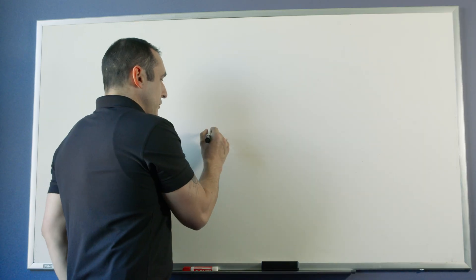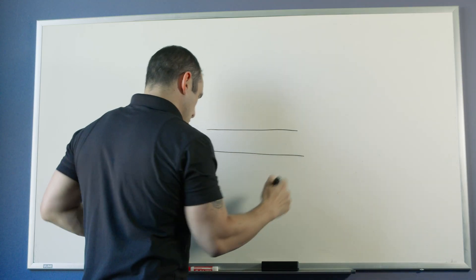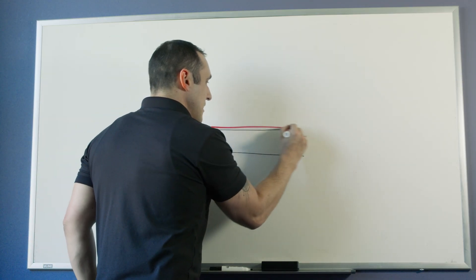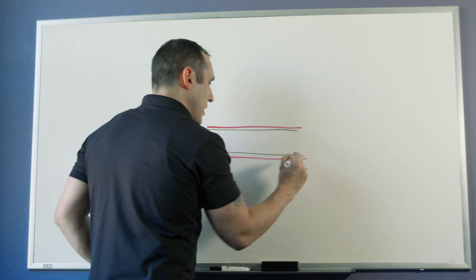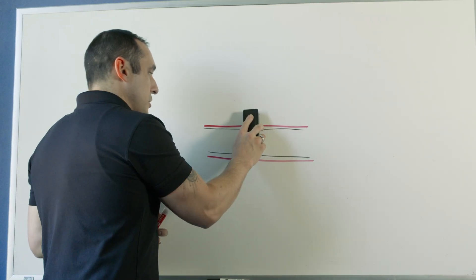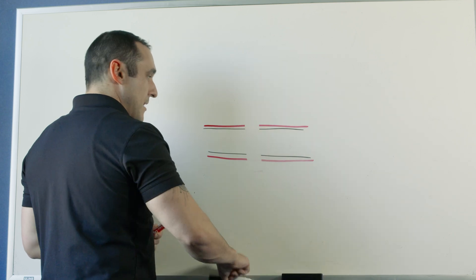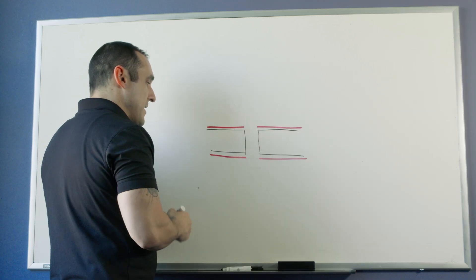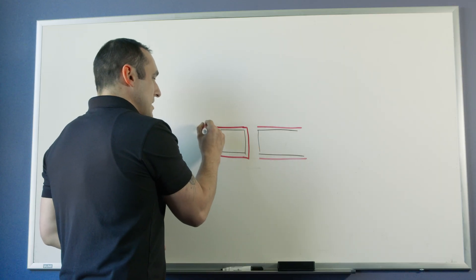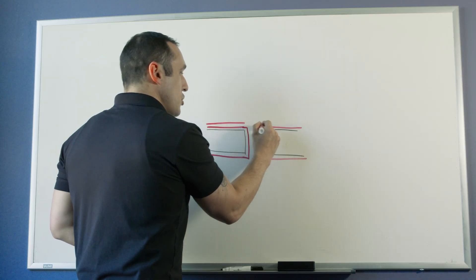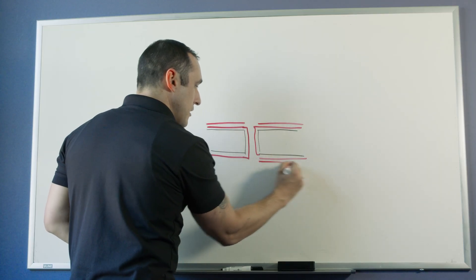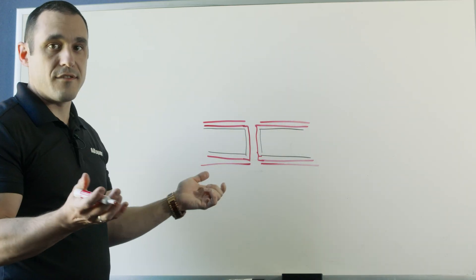Let's consider a slab of dielectric material — normally in a PCB there's already some copper foil on it. To form a via we drill it, leaving a hole wall. That hole wall then gets plated in a plating process, which also applies an additional layer of copper on the top and bottom. And now we have our plated via.